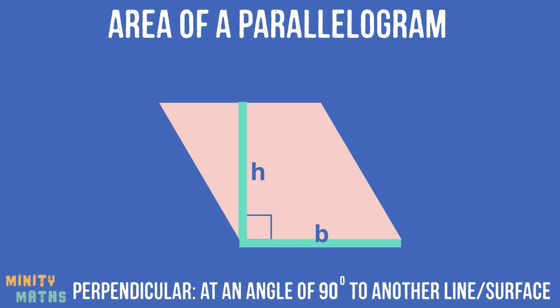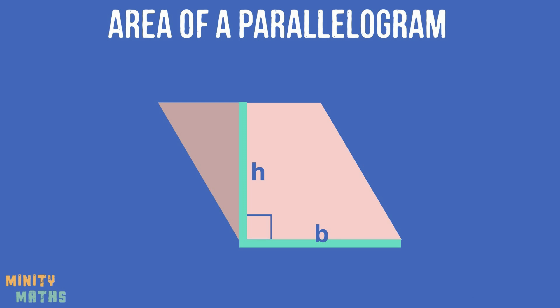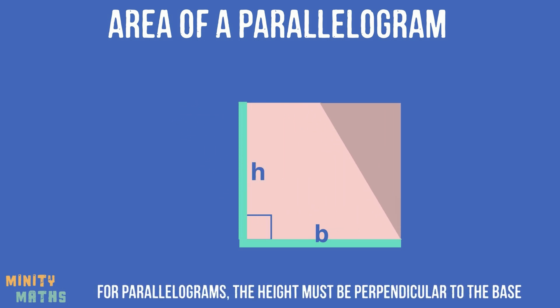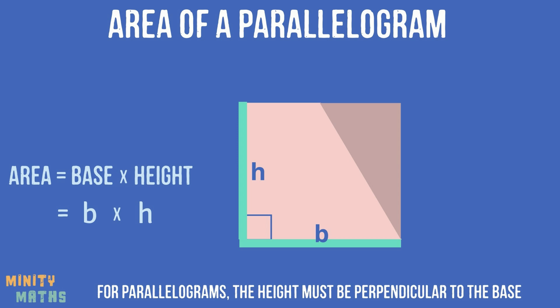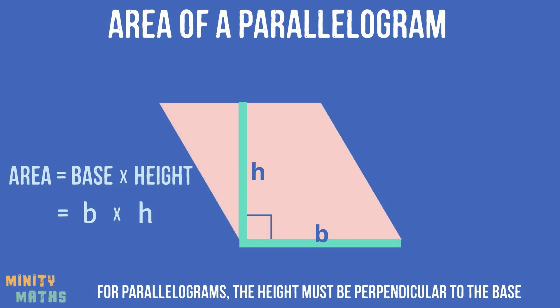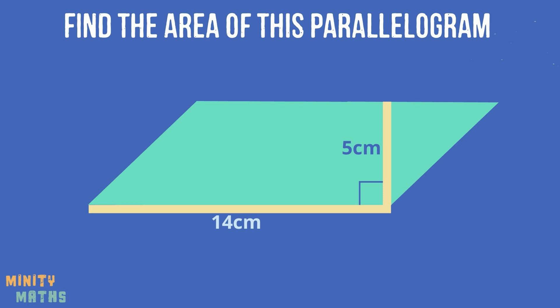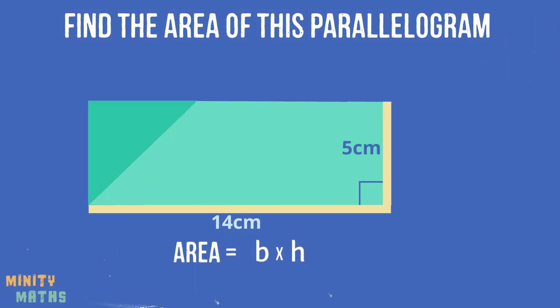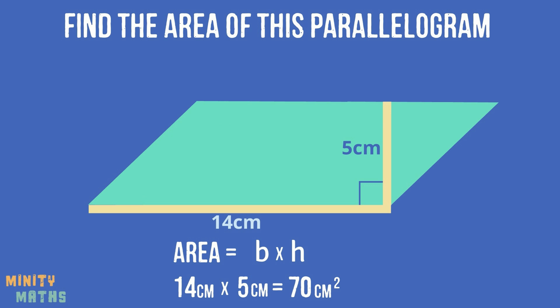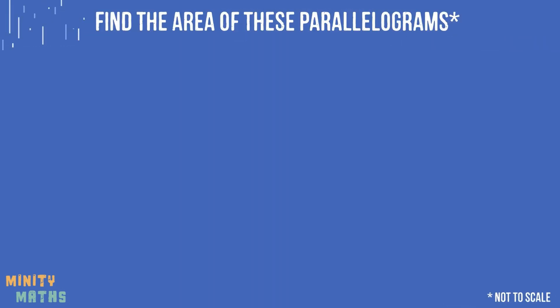Let's look at why. You can see here that if we take the section of the parallelogram that lies outside of the perpendicular height and move it across, we have a square or rectangle. Therefore, we can apply a similar formula for finding the area of a square or rectangle. Instead of length multiplied by width, we change the naming convention: length to base, and width to perpendicular height. Let's have a look at this example. Have a go at these practice questions and pause the video while you work them out.